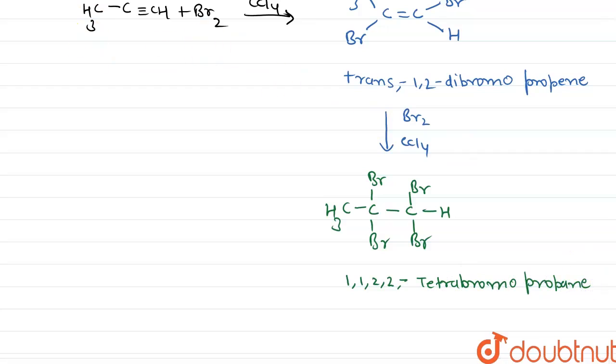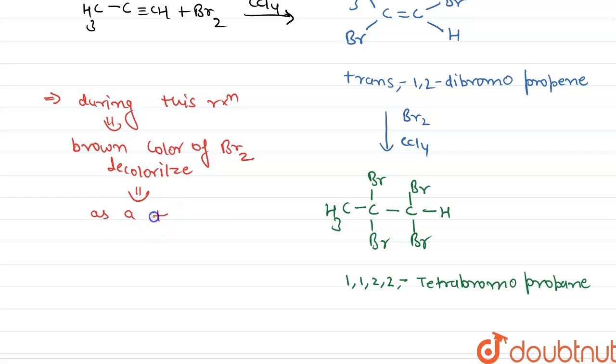During this reaction, the reddish brown color of Br2 is decolorized. Therefore we can say that the brown color of Br2 decolorizes, and hence this reaction is used as a test for unsaturation.